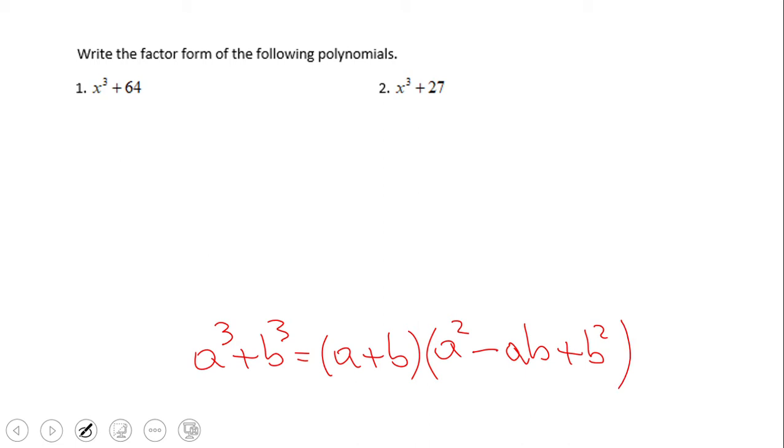Let's see this number one. This one is x³ + 4³, so we're going to have (x + 4), and then we square the x to get x², multiply the two terms x and 4 and switch the sign, and square the last term.